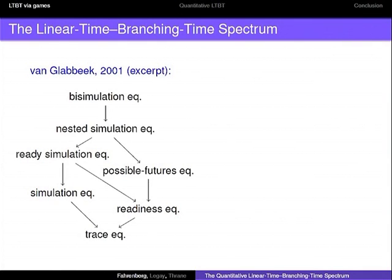Here is what is called the linear time branching time spectrum. I'm not sure that the year van Glabbeek 2001 is correct there, but this is something which Rob van Glabbeek basically wrote his thesis about. You see here different notions of equivalences and pre-orders which are all used by people to classify processes. You have some processes and then you are interested in whether they are doing the same thing, and what the answer is depends on your notion of doing the same thing.